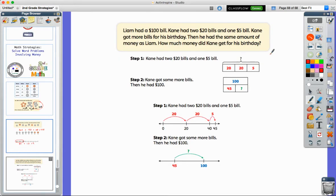Let's look at one more example. This one is dealing with actually dollar bills. Liam had a hundred dollar bill. Cain had two twenty dollar bills and one five dollar bill. Cain got more bills for his birthday, then he had the same amount as Liam. How much money did Cain get for his birthday? There are two examples of how to solve this in the book: one using a bar model, or part-part-whole model, another one using the number line.